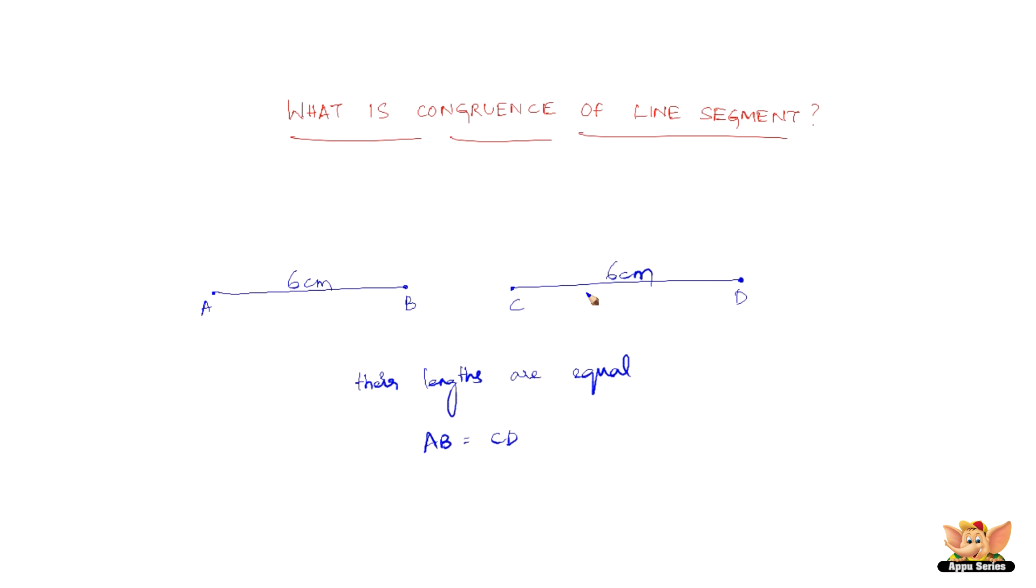Now, in case AB is 6cm and CD is, let me draw another figure, say AB is 5cm and CD is 7cm, then AB is not congruent to CD because they are not equal.